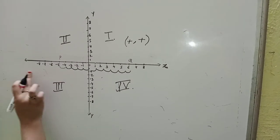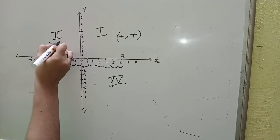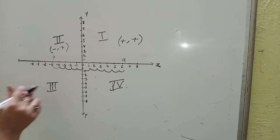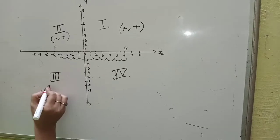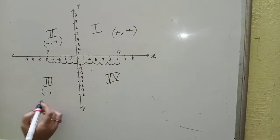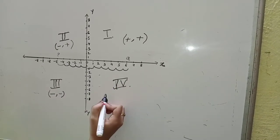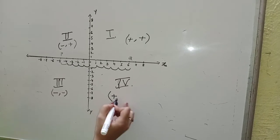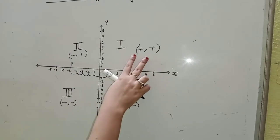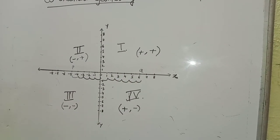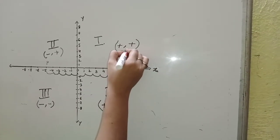In the second quadrant, on the x-axis there are negative numbers and on the y-axis there are positive numbers. In the third quadrant, on the x-axis there is a negative number and on the y-axis there is also a negative number. And in the fourth quadrant, on the x-axis there is a positive number but on the y-axis there is a negative number. So that is why we use plus-plus, plus-minus, and so on to represent x and y signs in each quadrant.